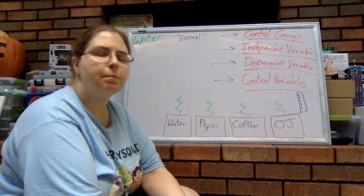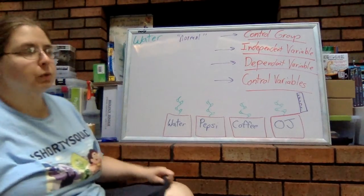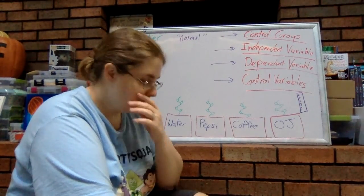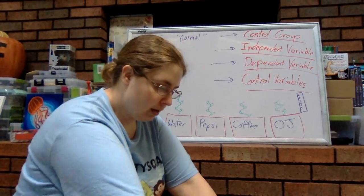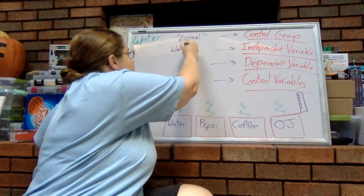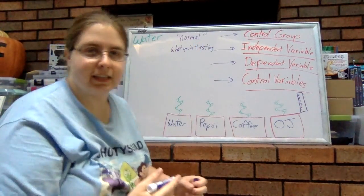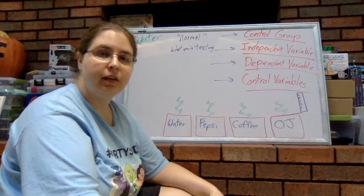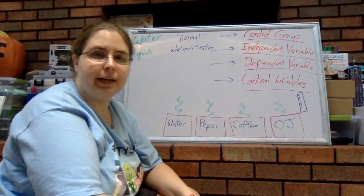The next are the independent and dependent variables. The term independent means it's fine on its own — it doesn't rely on anything — whereas dependent means it does rely on something. The independent variable is the variable that you, as the experimenter, are choosing to do differently. It's what you are testing. What are we choosing to do differently in this experiment? We are choosing to use different liquids. So the liquids are my independent variable.